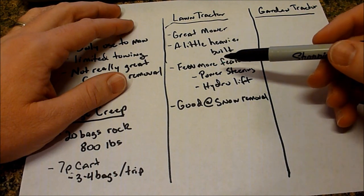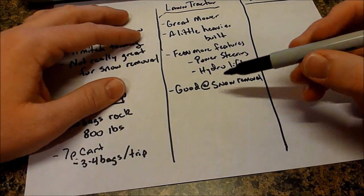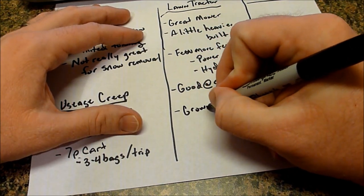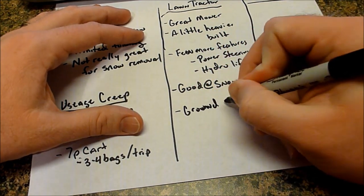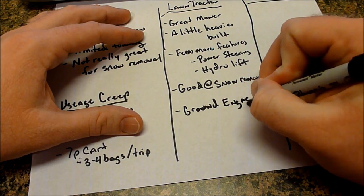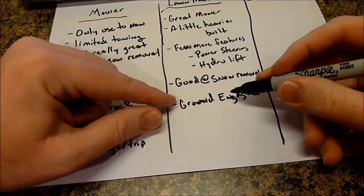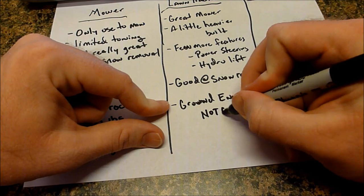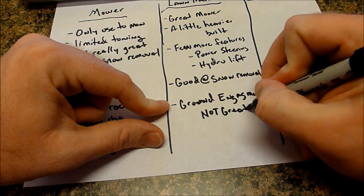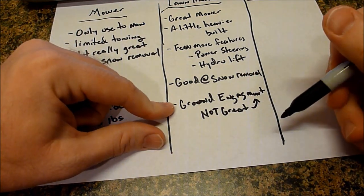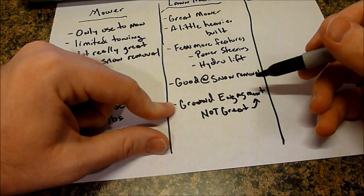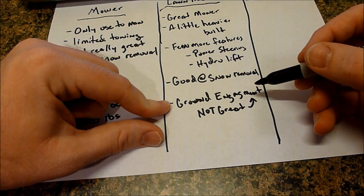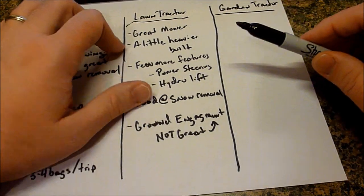What lawn tractors are not good at is most of them are not good at ground engaging. You can still tow stuff. And I'm just going to say not great at ground engaging because they can do ground engaging work. They're just not designed to it. They're designed to occasionally do ground engaging work, not do ground engaging work all the time. So that's where their fault lies.